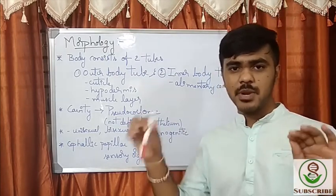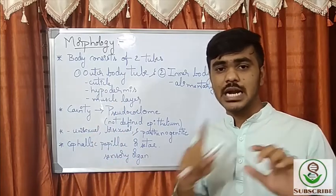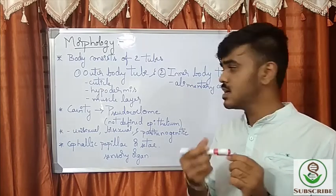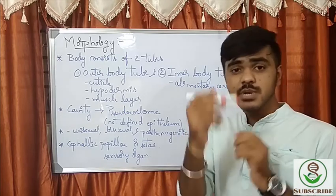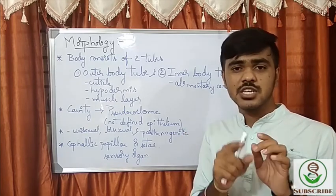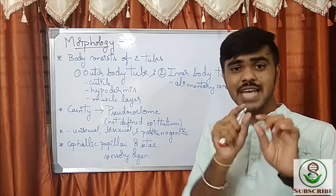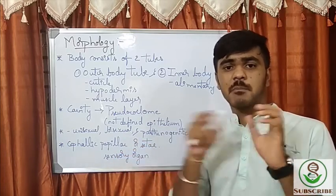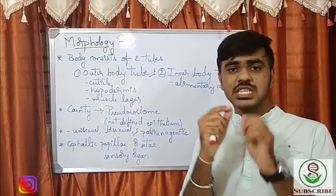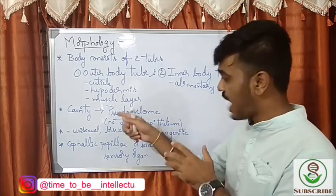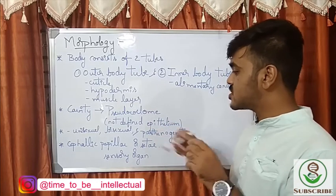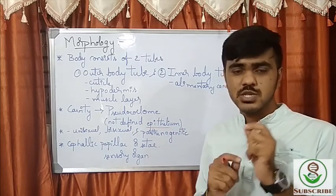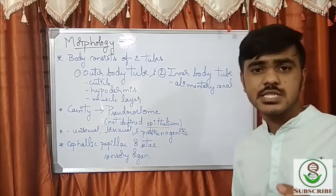The complete body of the nematode contains two tubes. One is the outer tube, which includes the cuticle layer, hypodermic layer, and muscle layer. The other is the inner tube — the alimentary canal or digestive tract, where food intake and excretion takes place. Between those two tubes is a cavity called the pseudocoelom, as there is no defined epithelium in that coelom.